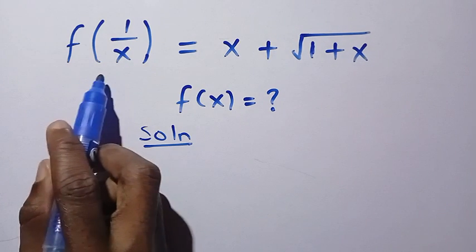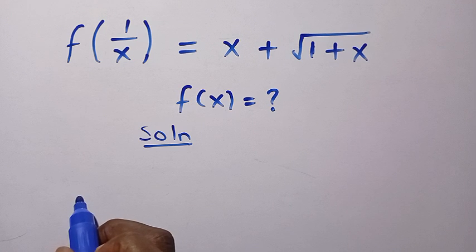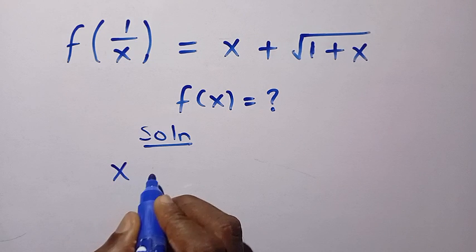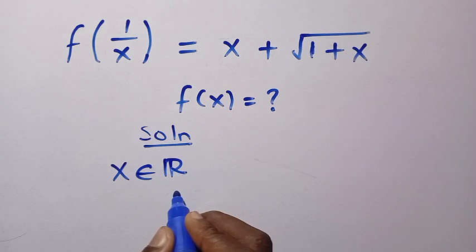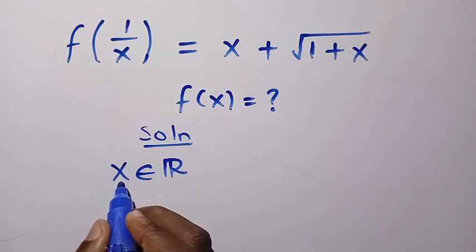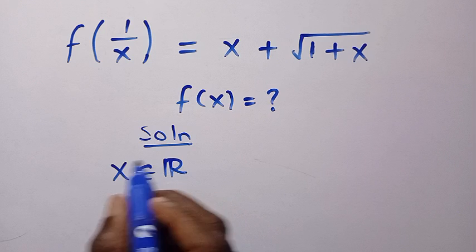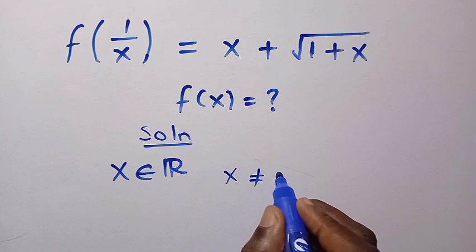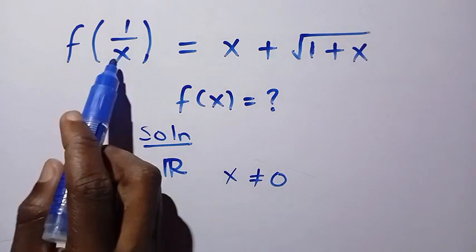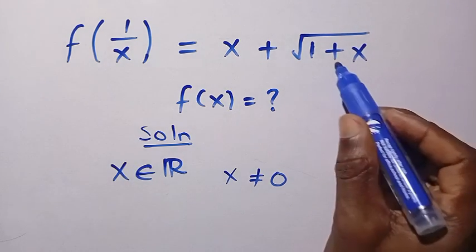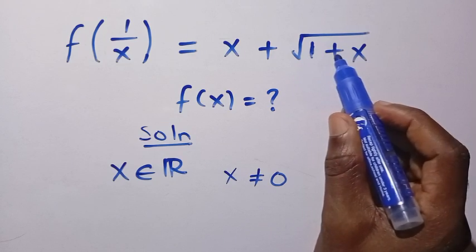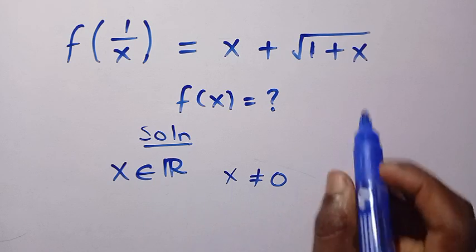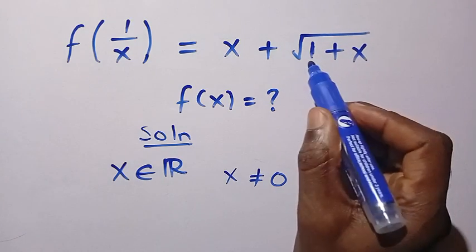The argument here is 1/x, so we have to define the function's domain carefully. The values of x are members of the real numbers, but not all real x will satisfy the given function. First, x must not equal 0. Also, we have the square root of (1+x), so the expression inside the root must not be negative, since we are working in the real numbers.